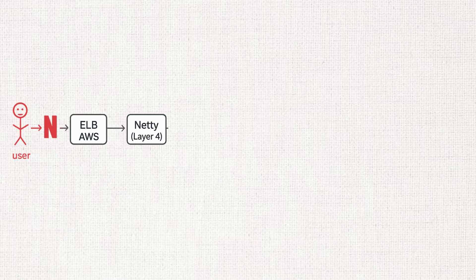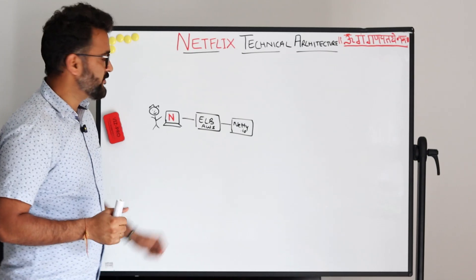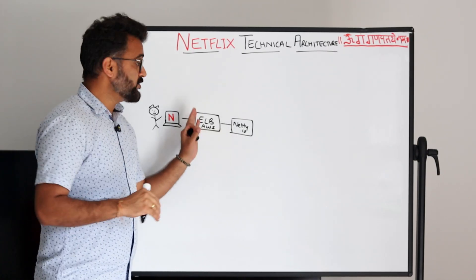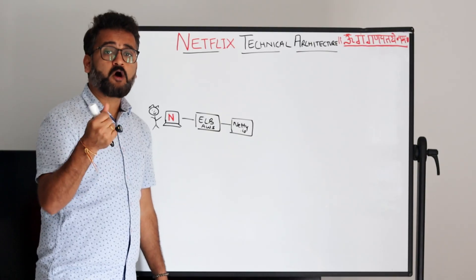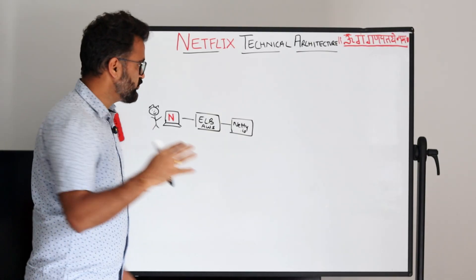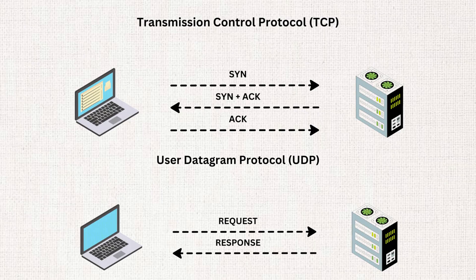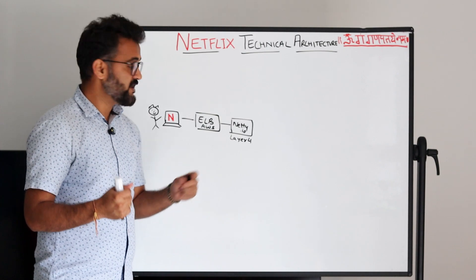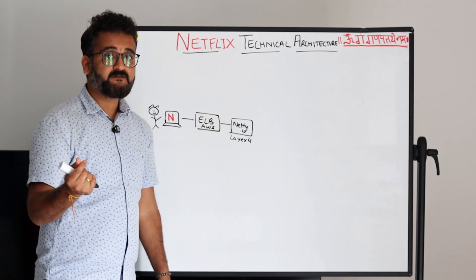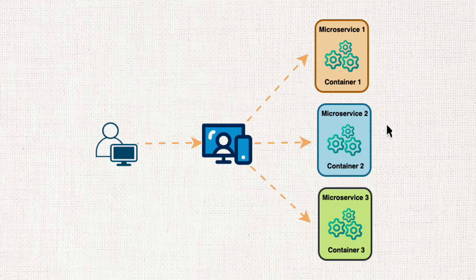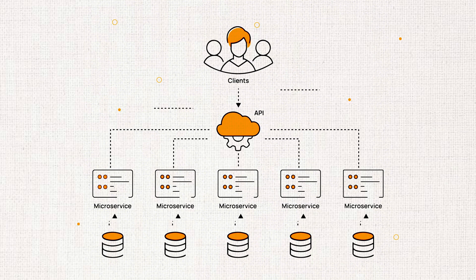After the load balancer comes a networking framework called Netty.io. It is an open-source framework used for processing all the different incoming requests and for very fast input and output operations at the network layer. Netty works at Layer 4, so TCP and UDP packets all go through Netty because it is very efficient. Once it passes through Netty, the actual magic starts — we begin to see the microservices architecture and how everything has been distributed into small, individual components.